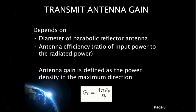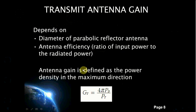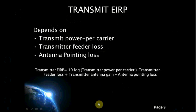To calculate the transmit antenna gain, we need to have the diameter of the parabolic reflector antenna and the antenna efficiency. Antenna efficiency is the ratio of input power to the radiated power of the antenna, denoted by H. The value of H lies between 0.55 to 0.73. The isotropic power gain of the antenna is defined as the power density in the maximum direction, denoted by Pd, to the power density achieved by a 100% efficient isotropic radiator.